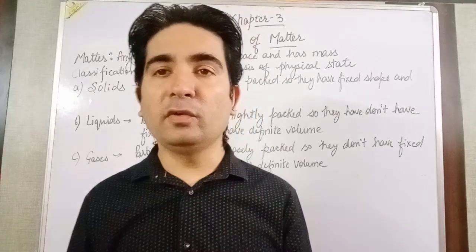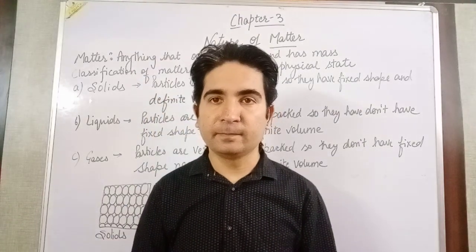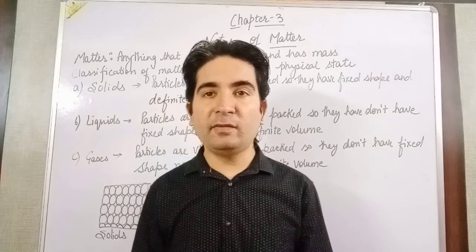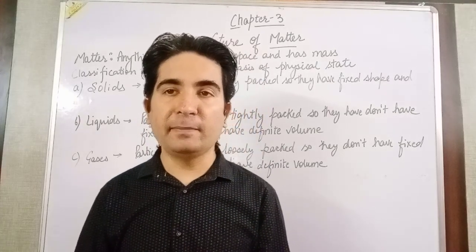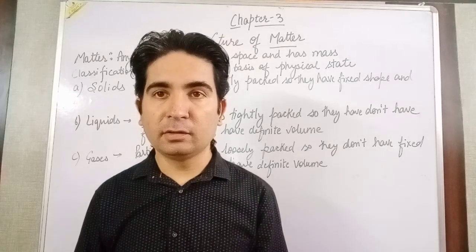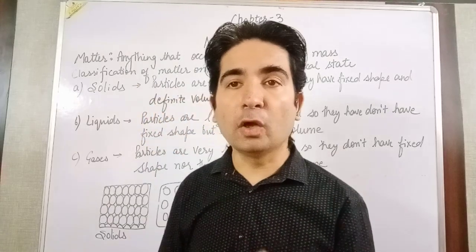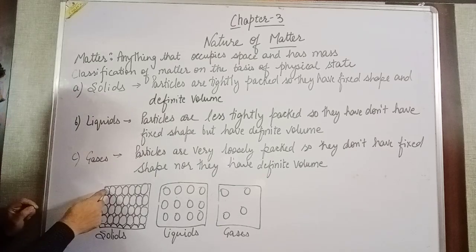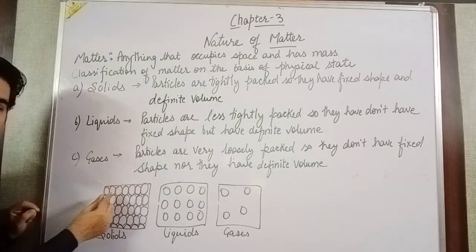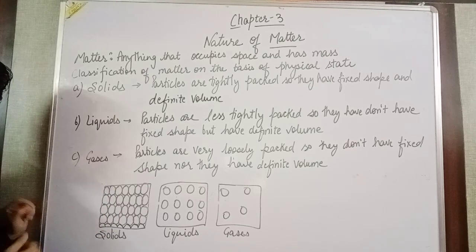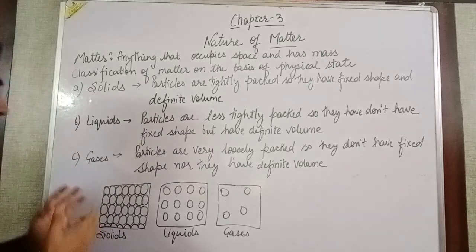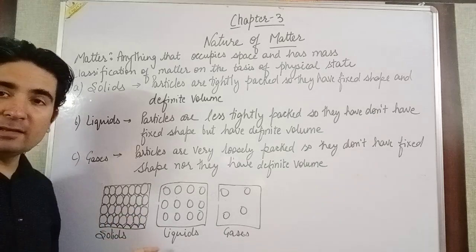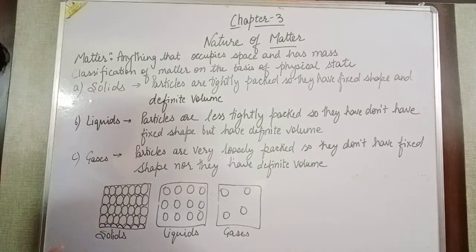So what are the things that are made up of matter? Now matter is necessary to classify. On the basis of the physical state, we can classify matter into three different forms. The first form is solids. These are particles of solids — these small particles are very tightly packed, so they are unable to move. That's why we say that solids have a fixed shape and a definite volume.